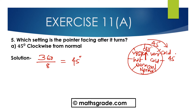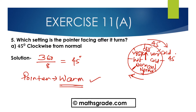45 degrees clockwise from normal. This is the clockwise direction, and 45 degrees from normal — this one is normal. This one is 45 degrees, meaning only 1 pointer. Move to only 1 pointer — 45 degrees, move to 1 pointer. That represents 'warm'. So the pointer is warm.